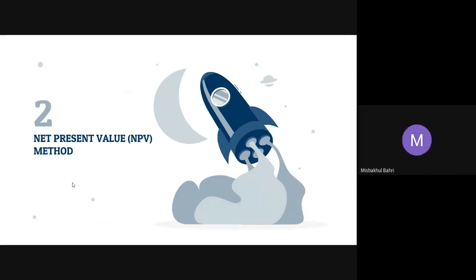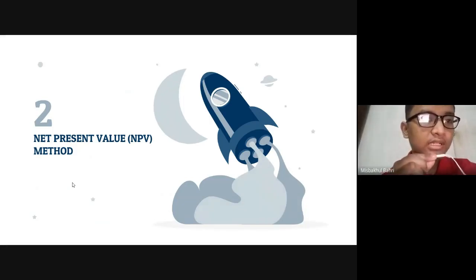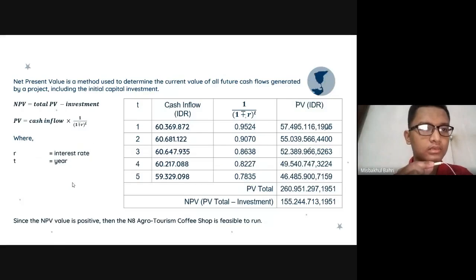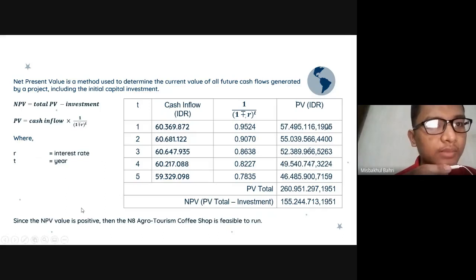Okay, thank you Arina. For the second method, we are using the Net Present Value or NPV method. Net Present Value is a method used to determine the current value of all future cash flows generated by a project, including the initial capital investment. NPV equals total PV minus investment.